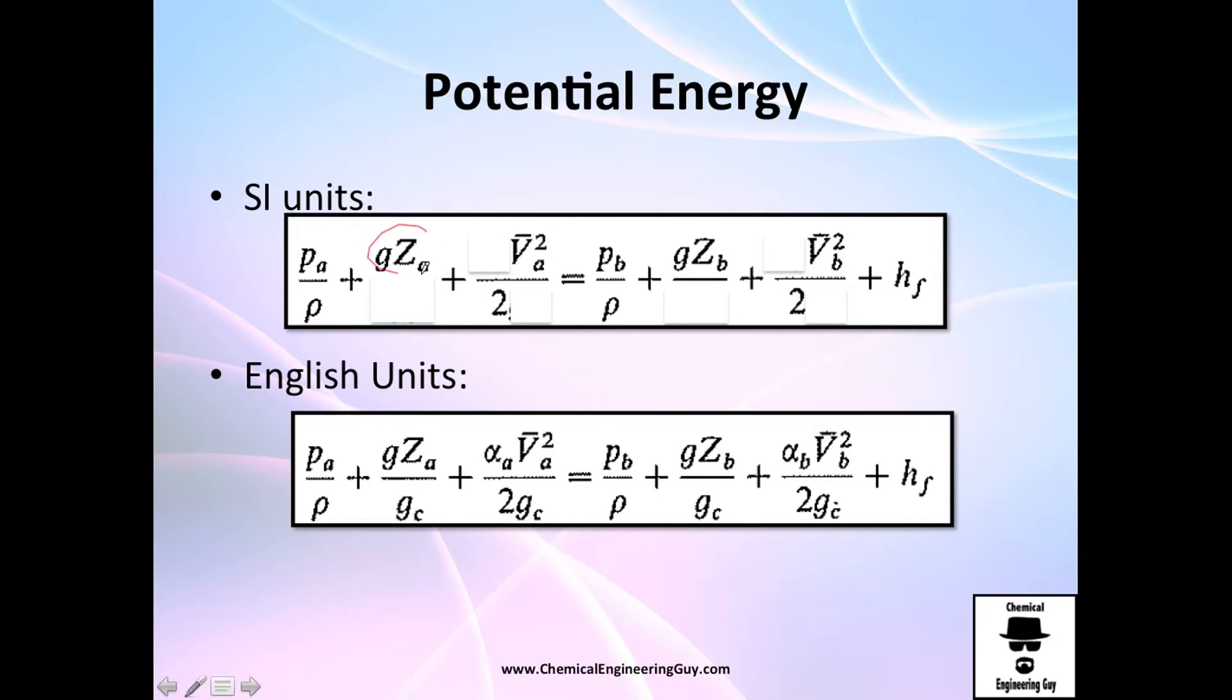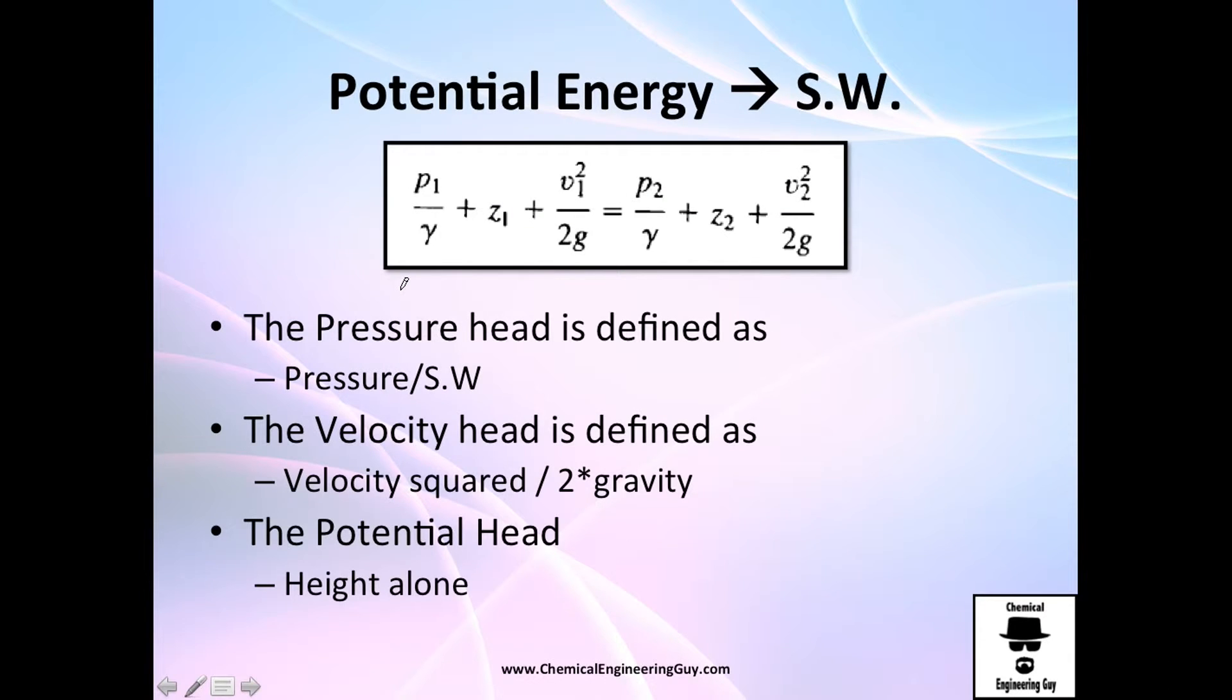So once again, this is what we use, but recall that you can divide by gravity. Don't forget to use the gc, the gravitational constant, if you're using the English system. If you're using SI units, it's so beautiful, you just need to use gravity times that height. Once again, what do we do with specific gravity? Well, we divide by gravity and we got only height.